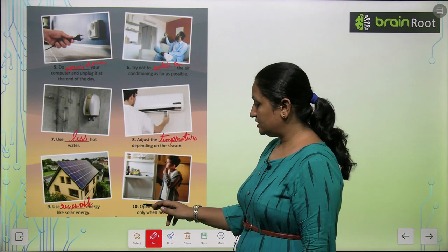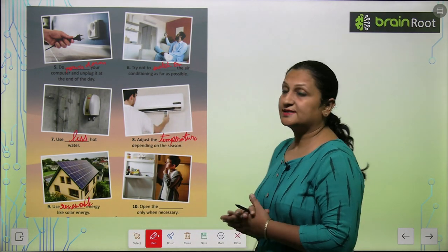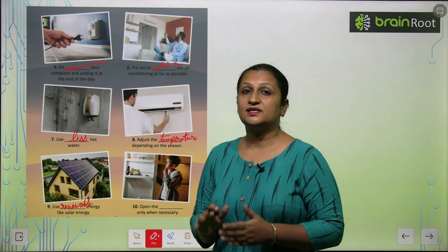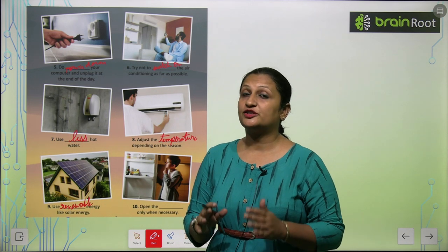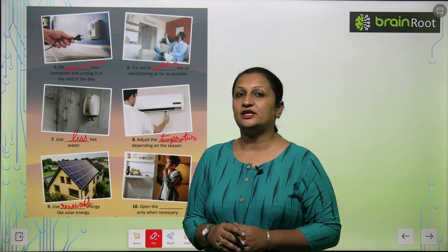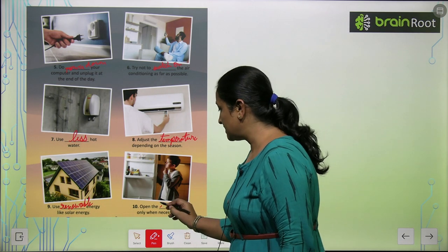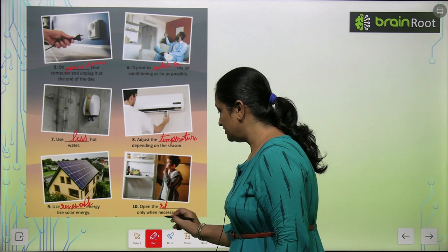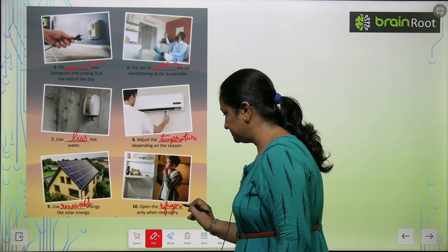See the tenth one, children? Open the blank only when it is necessary. This is refrigerator — aapko refrigerator tabhi kholna chahiye when it is necessary. So you will write: Refrigerator.